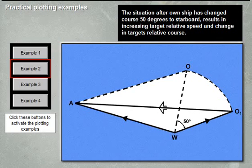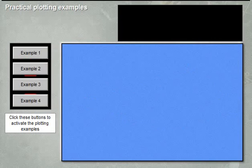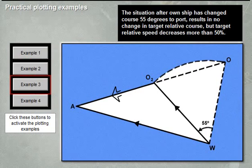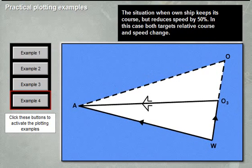WO is the relative course 50 degrees to starboard, showing target relative speed and relative course. If own ship has changed course 55 degrees to port, the time to closest point increases more than 50%.